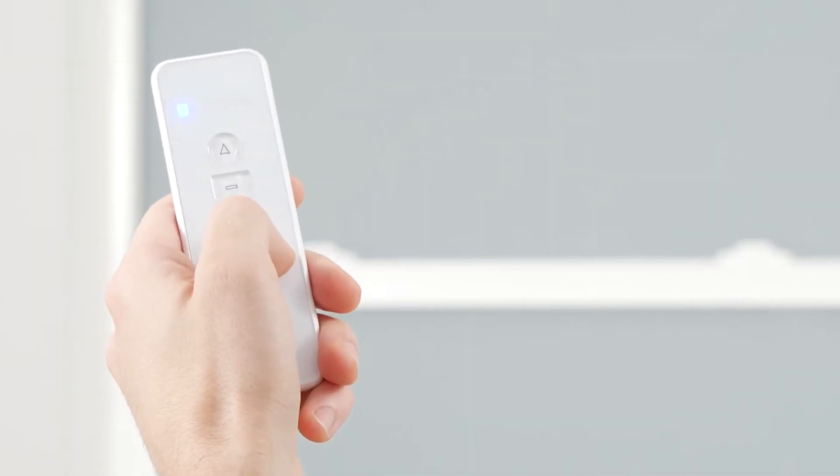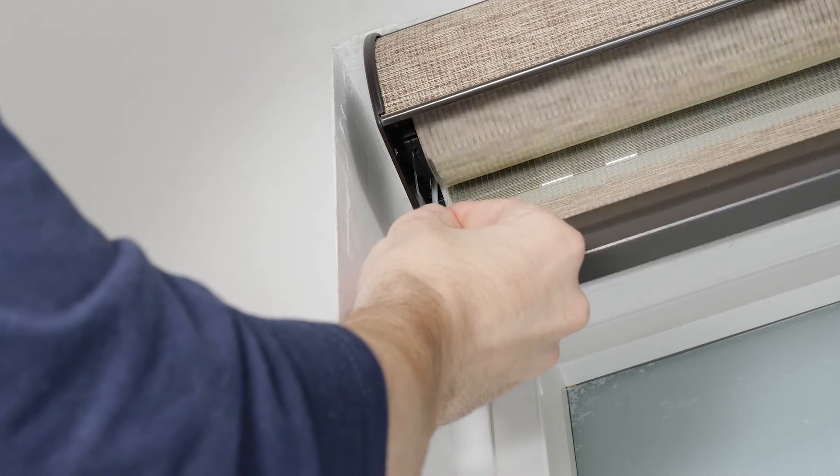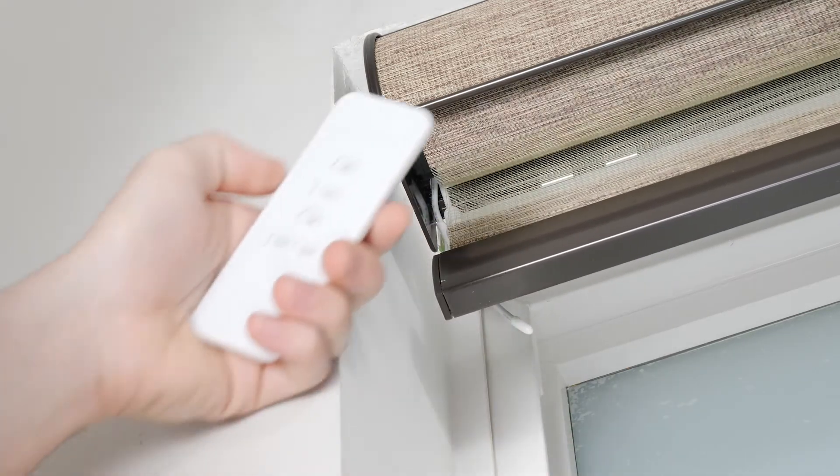Select a channel to pair your shade to, press the program button on the motor head until the shade beeps and jogs, and then press up on the remote.